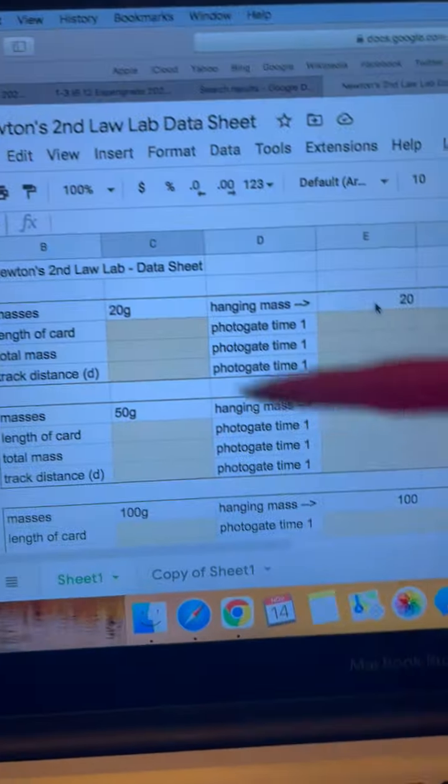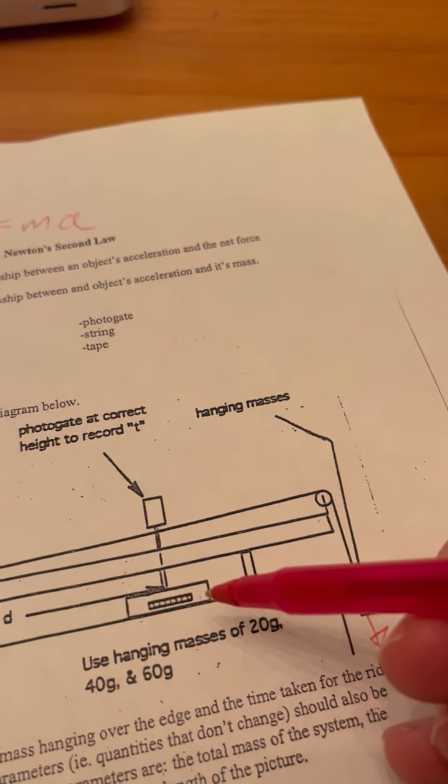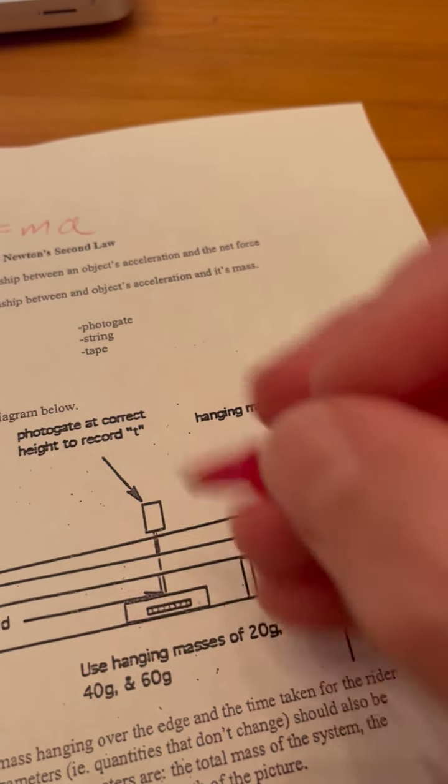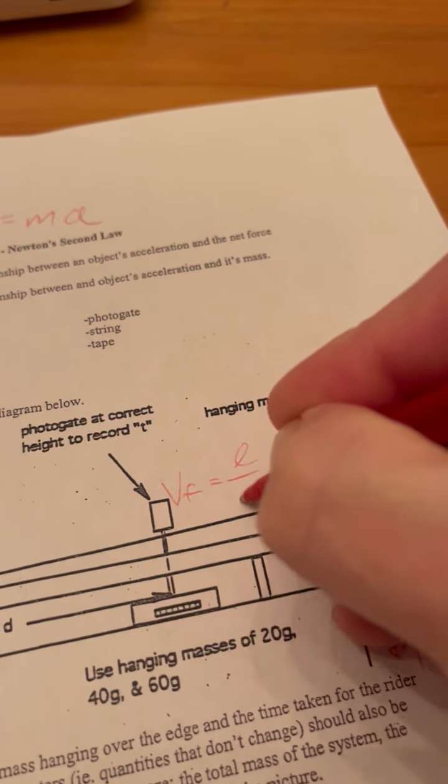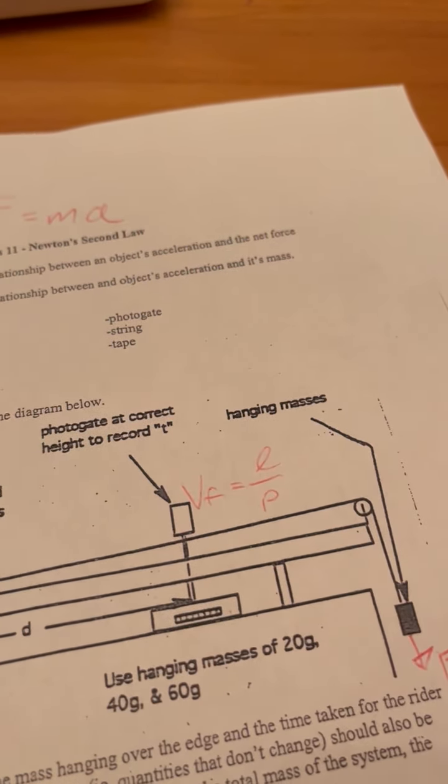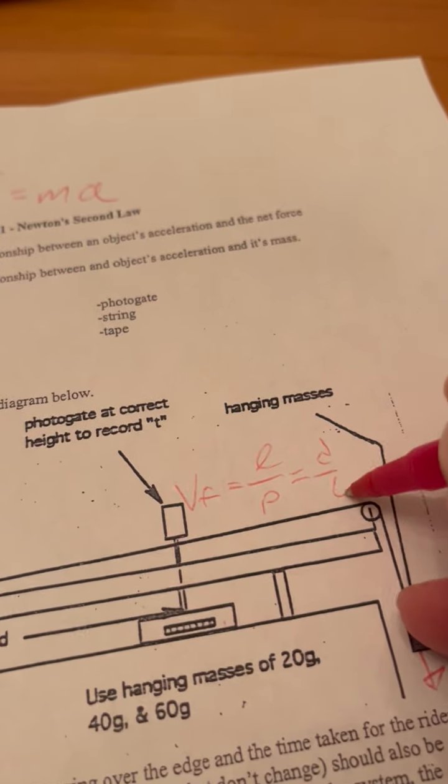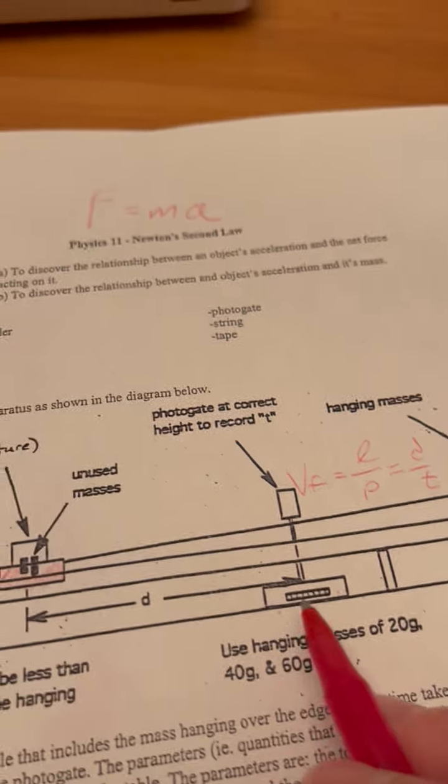Your length of card divided by the photogate time is your final velocity. So that's going to give you VF is the length of the card over the photogate time. So that's distance over time, really, right? And that's going to give you your final velocity.